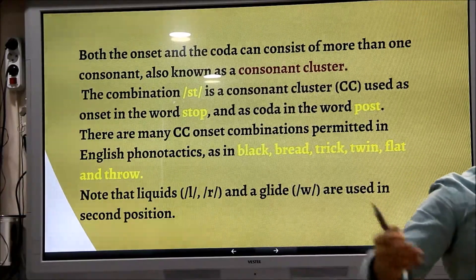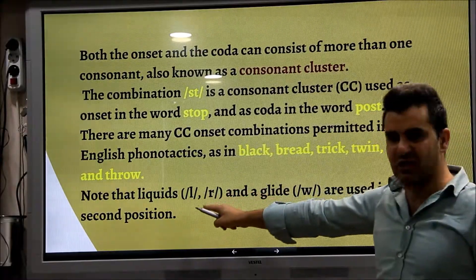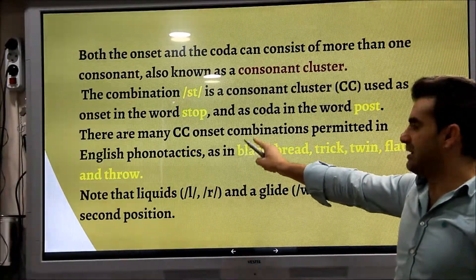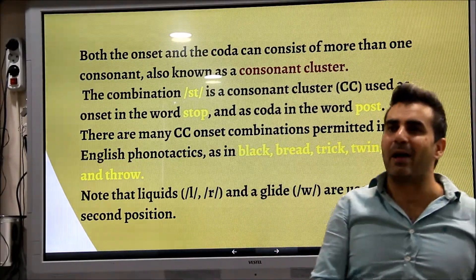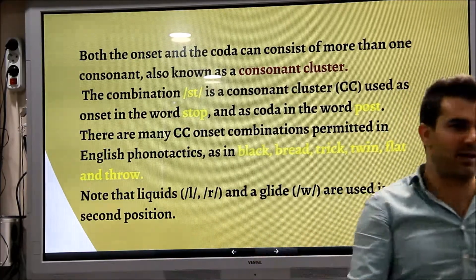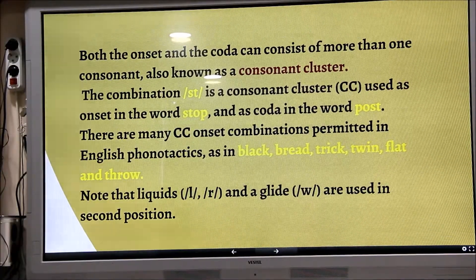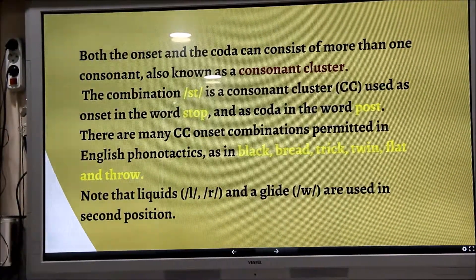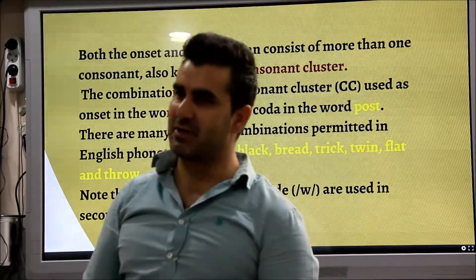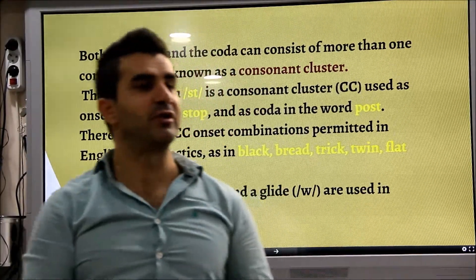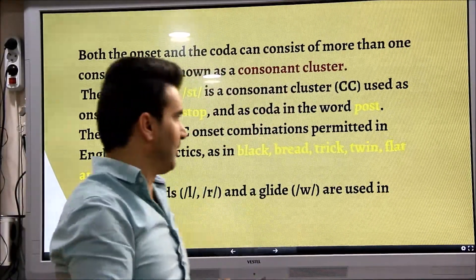Consonant cluster olduğu zaman genellikle şunu anlıyoruz: 'liquid' — yani akıcı sesler ikinci pozisyonda olur. 'Black' gibi. Yani bu kombinasyonu 'lbat' şeklinde göremezsiniz. The description of these combinations is provided through phonotactics. We know valid combinations through phonotactics.